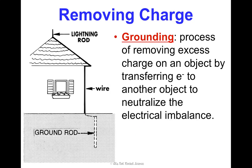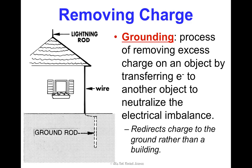One of the things we do to protect ourselves from this is something called grounding — a process of removing excess charge on an object by transferring electrons to another object in order to neutralize the electrical imbalance. It's basically redirecting the charge to the ground rather than to a building. Some buildings have a rod on them and then a wire that conducts that charge all the way to the ground, basically underground, to protect the house — the charge is simply neutralized underground. If you've ever seen a picture of the Eiffel Tower, it has one of these mechanisms on it, which is pretty cool.